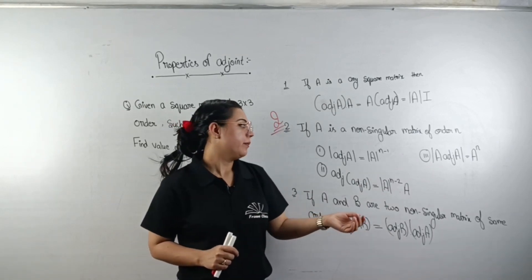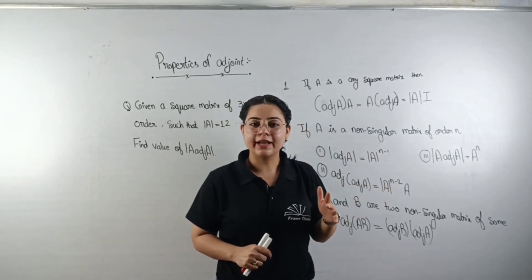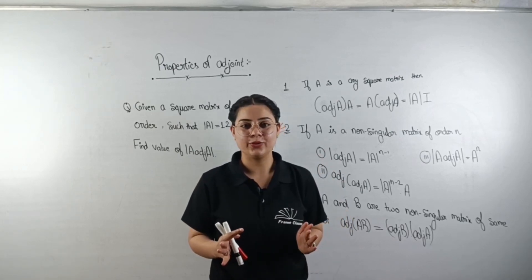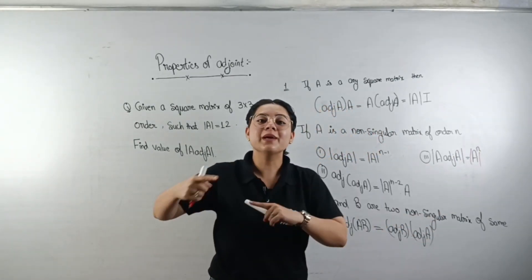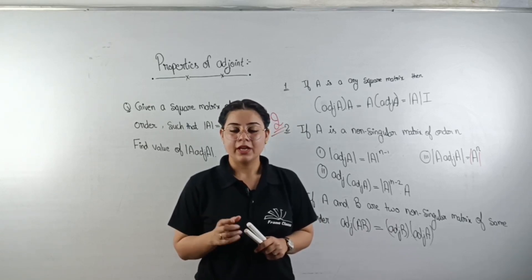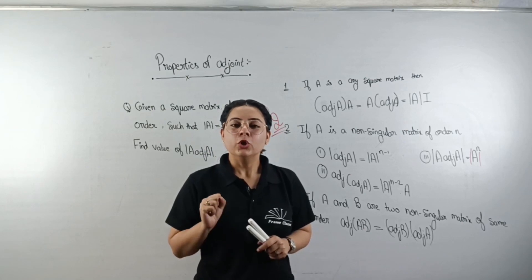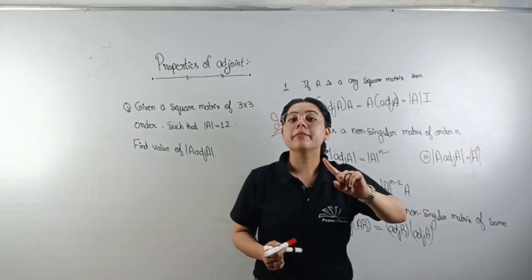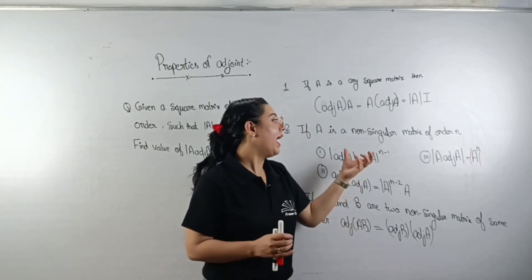The next property is the most important of these three. If we have a question asking us to find the determinant of A into adj(A), then we simply calculate |A| to the power of the order n. For a 3×3 matrix with determinant 8, the answer is 8 to the power of 3. This is the third property.